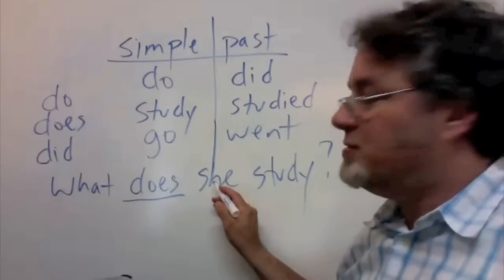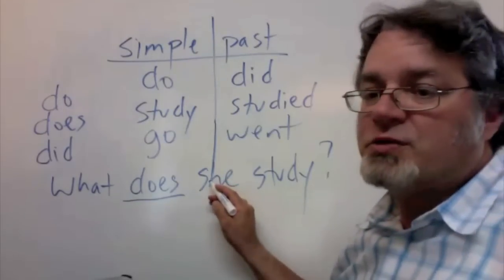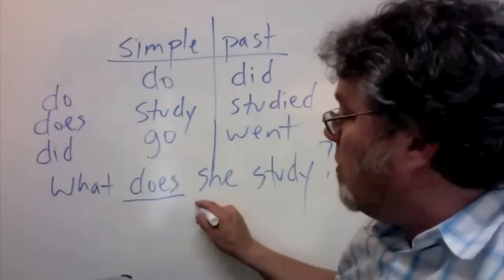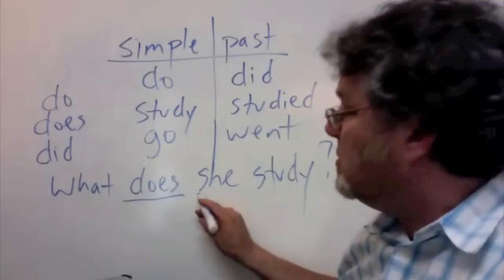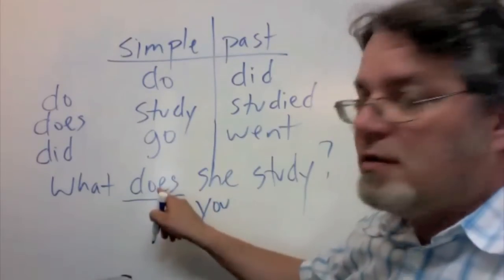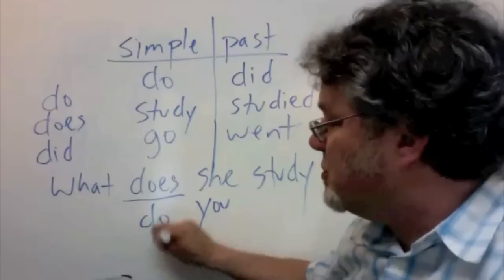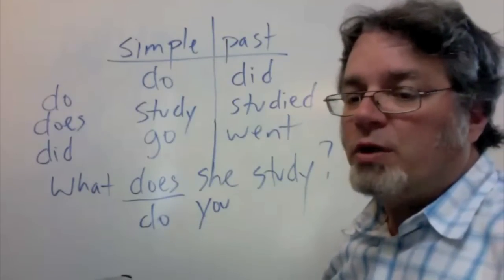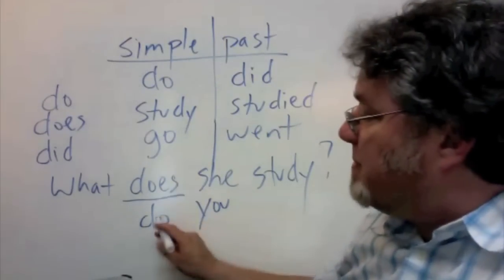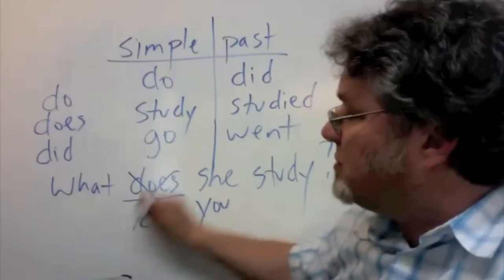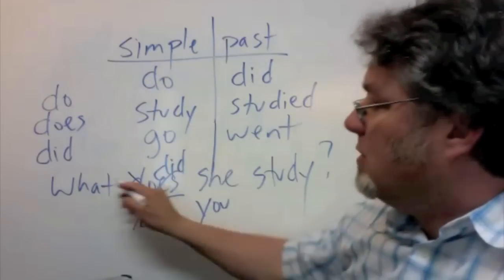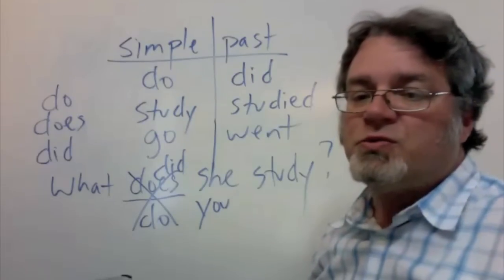The subject is she. If I change the subject to we, or they, or you, then this helping verb has to change to do. What do you study? And if it's in the past tense, then just use did. What did she study? What did you study?